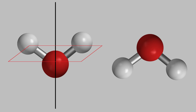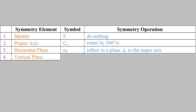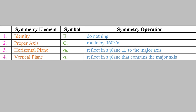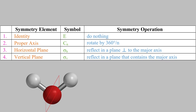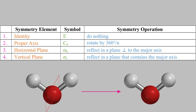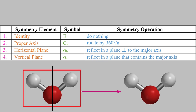The second type of mirror plane is a vertical mirror plane, with the symbol sigma_v. Instead of being perpendicular to the major axis, this plane contains the major axis. For example, reflecting a water molecule in a plane that contains the C2 axis gives a molecule that looks just like the one we started with — making it a vertical mirror plane. We could also reflect the water molecule in the plane that contains the molecule itself, which is another vertical mirror plane because it also contains the C2 axis.